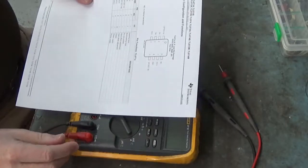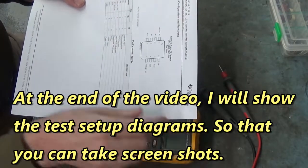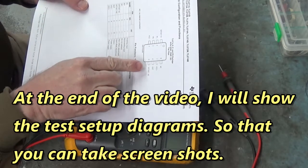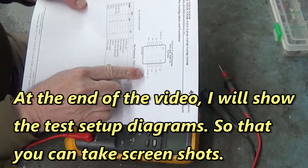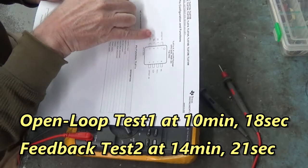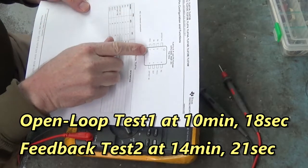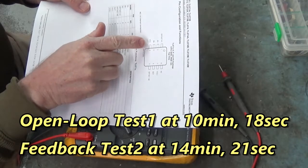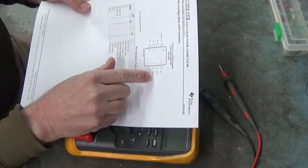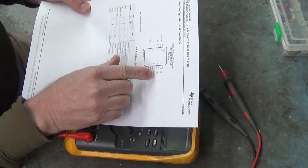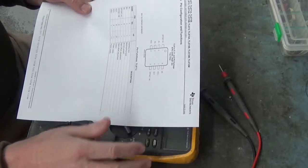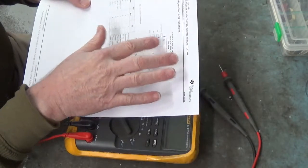I've got the diagram right here for the TL071 and it shows that pin one is offset null one, pin five is offset null two, pin two is the inverting input, pin three is the non-inverting input, pin four they call VCC minus, pin six is the output of the operational amplifier, pin seven they call VCC plus, and pin eight is no connection. I'm gonna set up our circuit based upon this diagram.